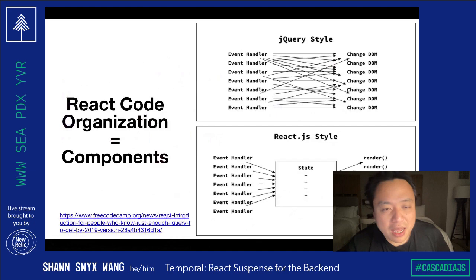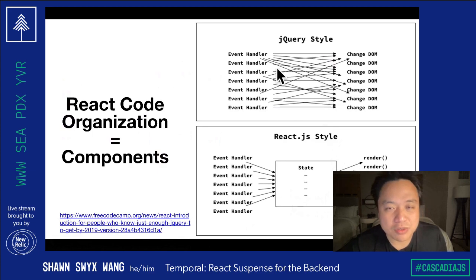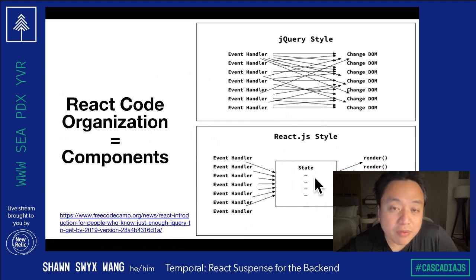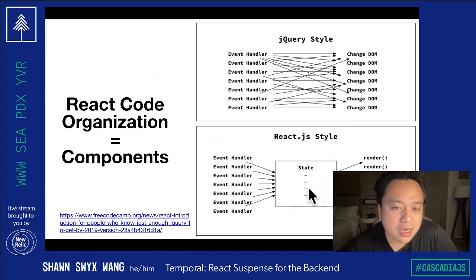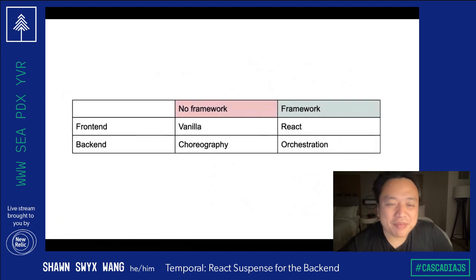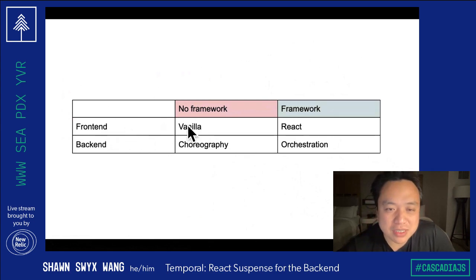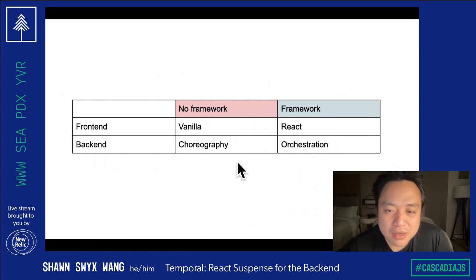We are an orchestration platform. I find it very similar to what React did for the frontend, in the sense that we used to not have much organization of our code. React gave us components where we had a central orchestrator — the React renderer, React DOM — and then we organized our code into components, which helped us tie up event handlers and render functions with central state orchestration. If you want to organize your code on the frontend, you use React. If you want to organize your code on the backend, you start to use orchestration.